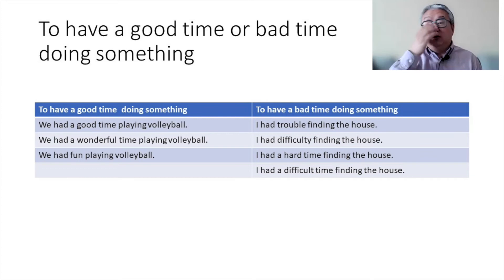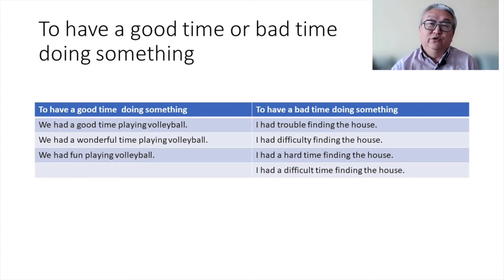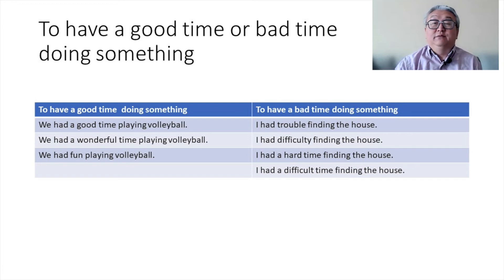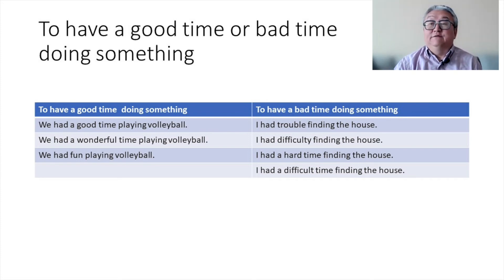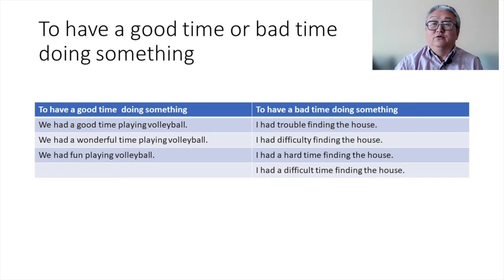The expression of having a good time or a bad time is always followed by doing something. We had a good time playing volleyball, we had a wonderful time playing volleyball, we had fun playing volleyball. For bad time: we had trouble finding the house, had difficulty finding the house, had a hard time, had a difficult time — all expressing difficulty. The non-predicate verb, the secondary verb, uses the -ing form.